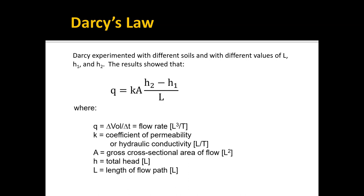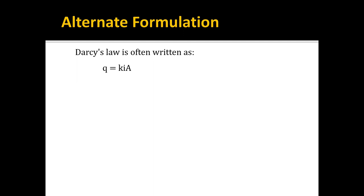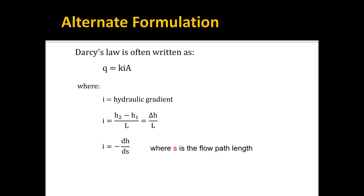That is Darcy's Law — it should be intuitive, and the beauty of it is it's very simple. Sometimes you will see Darcy's Law written in the form Q equals kiA. The i term is called the hydraulic gradient, and we've just lumped the head change divided by L into a single term. It's called a gradient because it represents how rapidly the head is changing versus distance, and the greater the hydraulic gradient the greater the flow rate — it is linearly proportional to the hydraulic gradient.